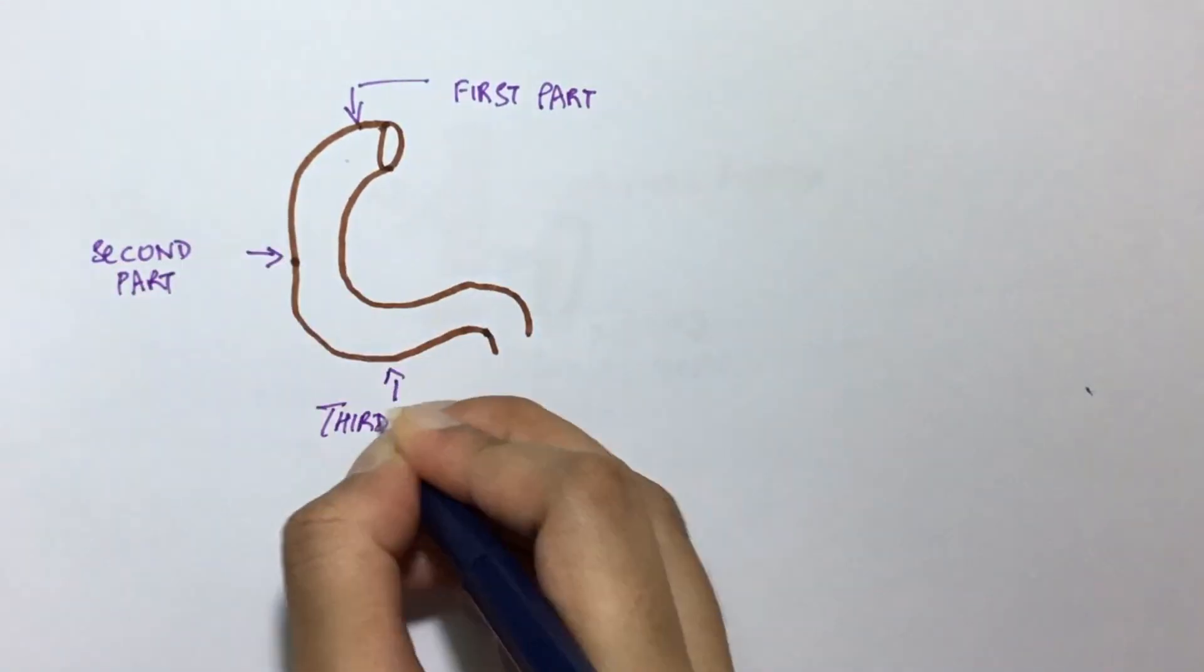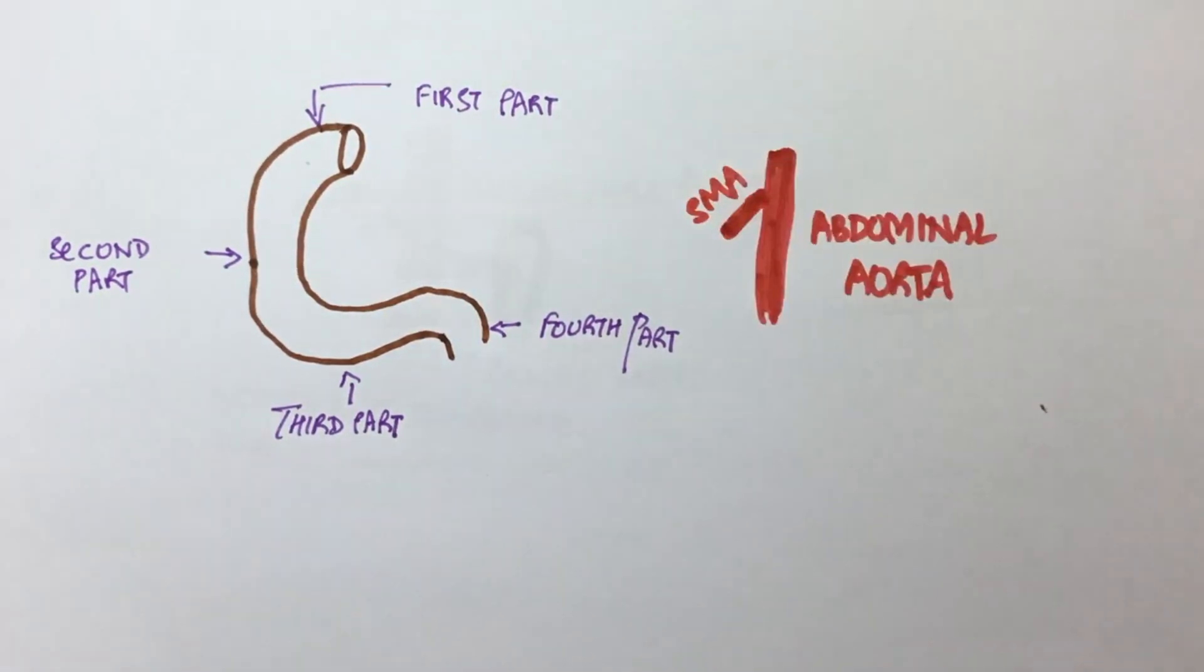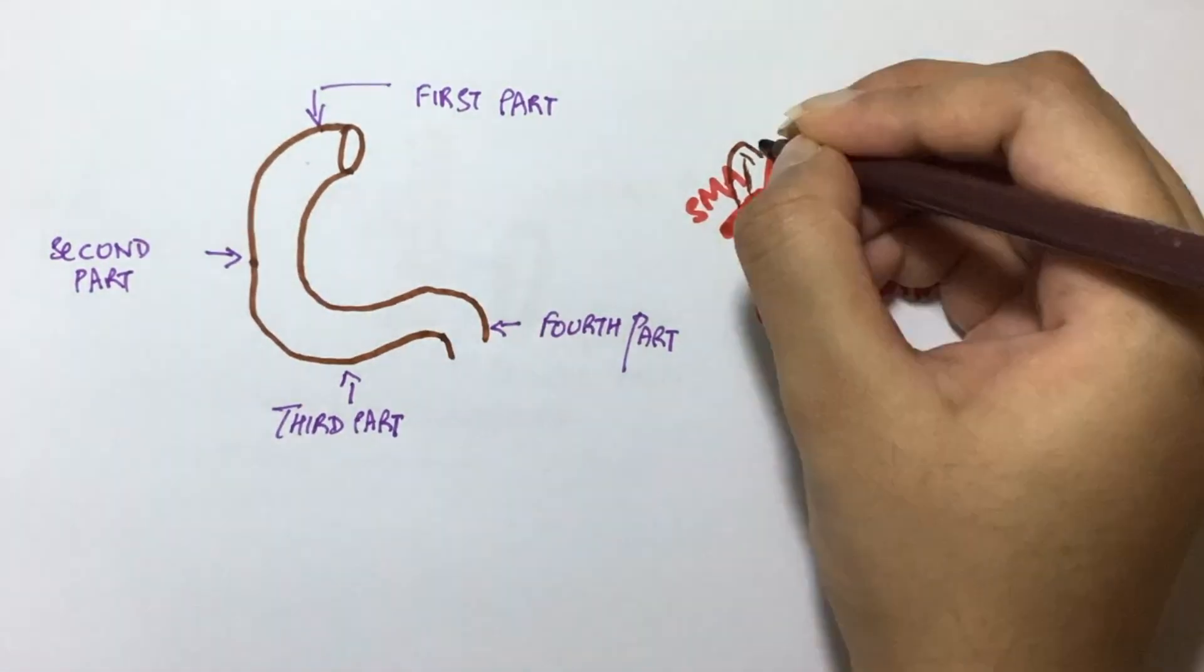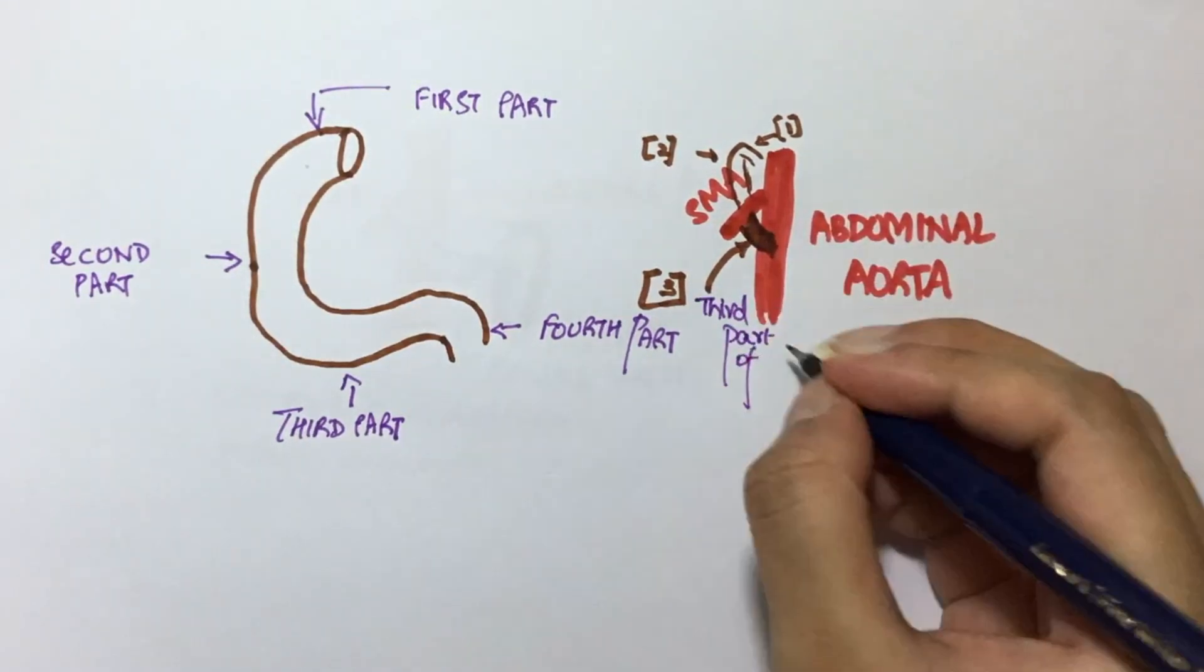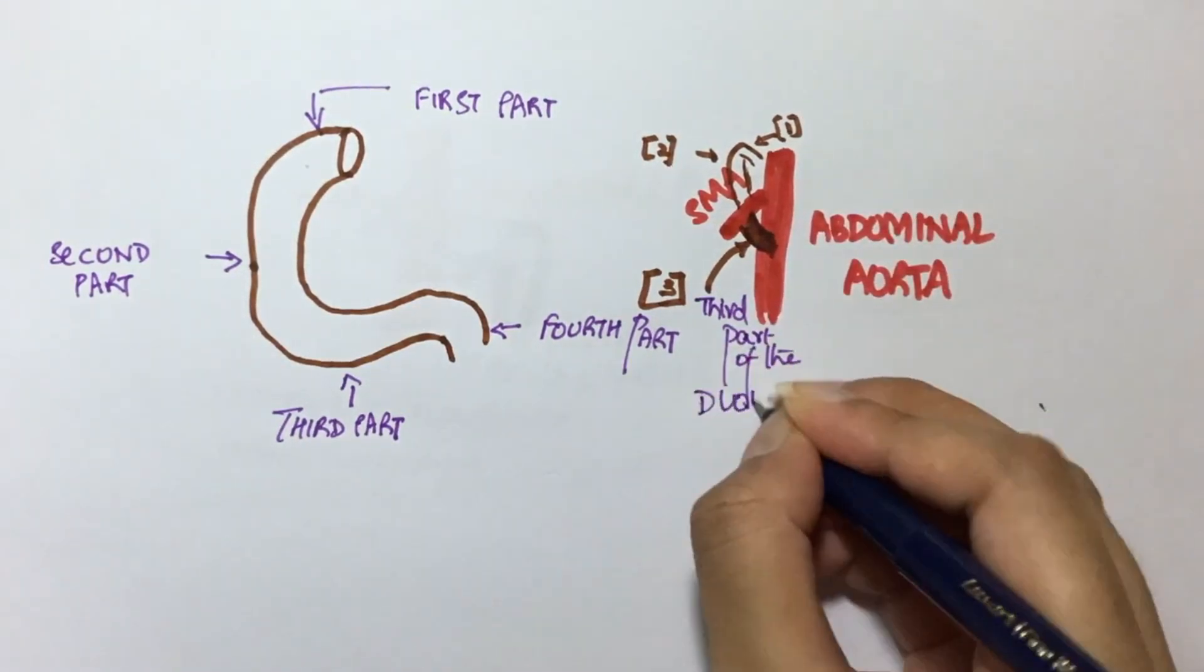Similar to the renal vein, the third part of the duodenum runs in between the superior mesenteric artery and the abdominal aorta. So this part of the duodenum can also get compressed between these two structures.